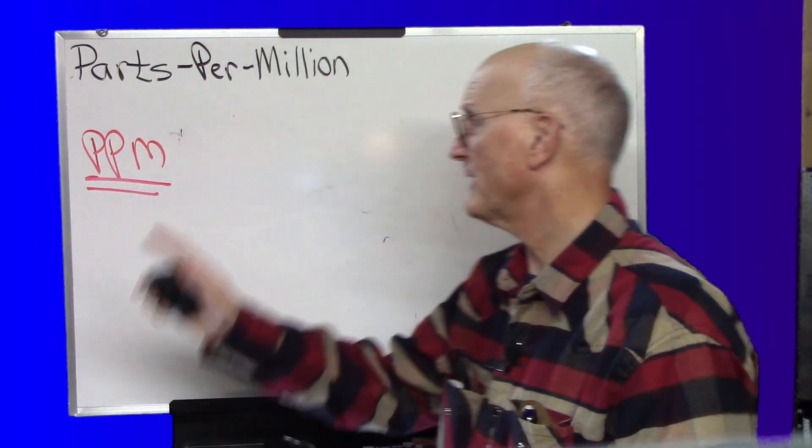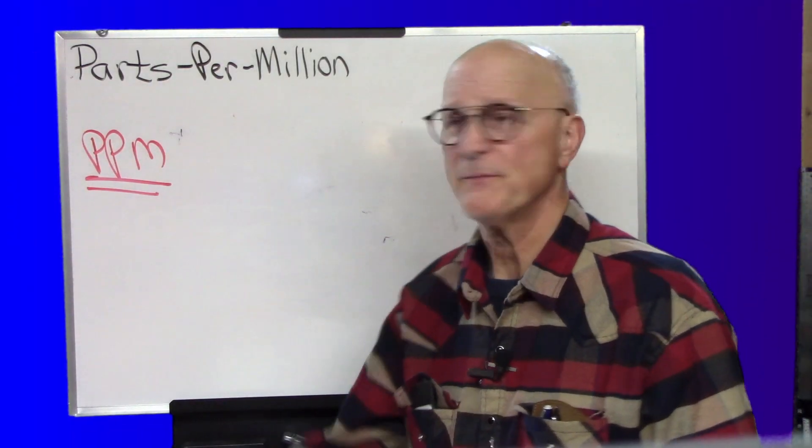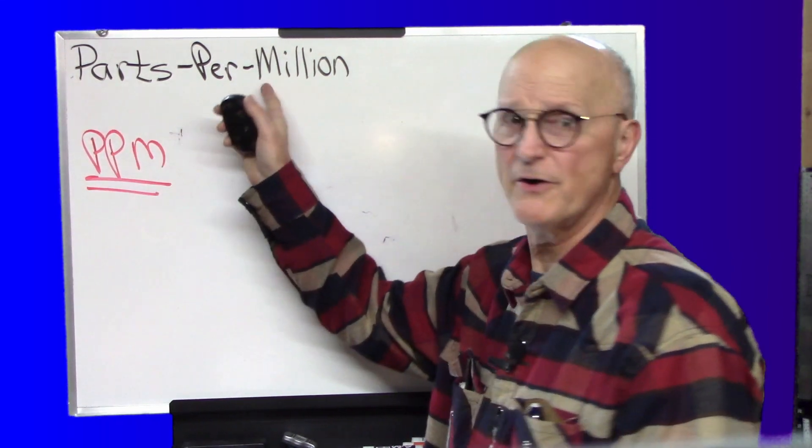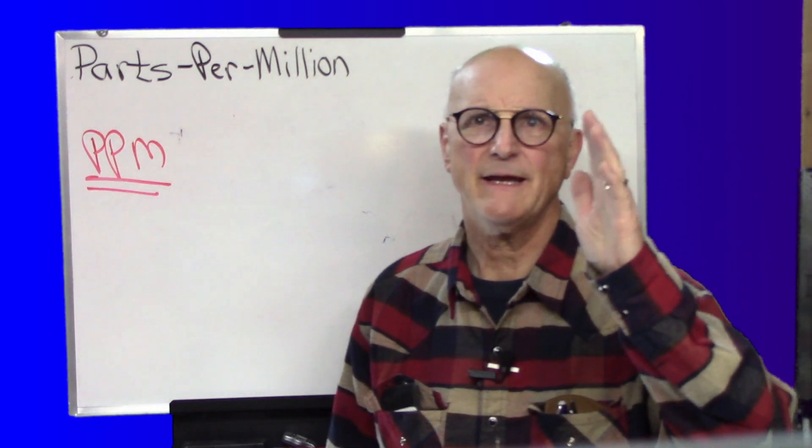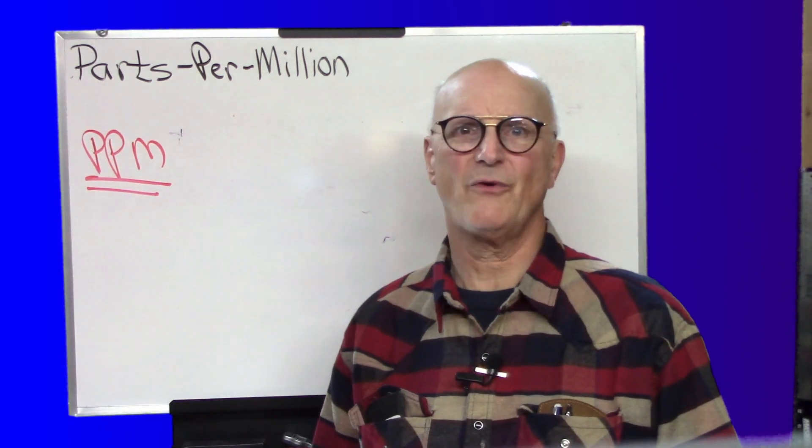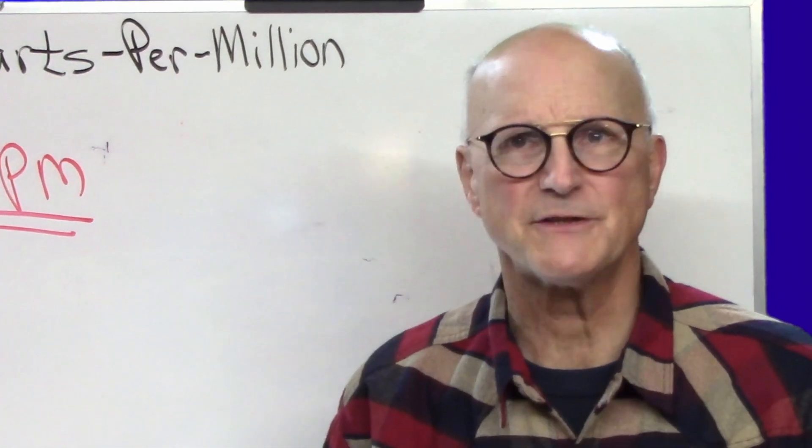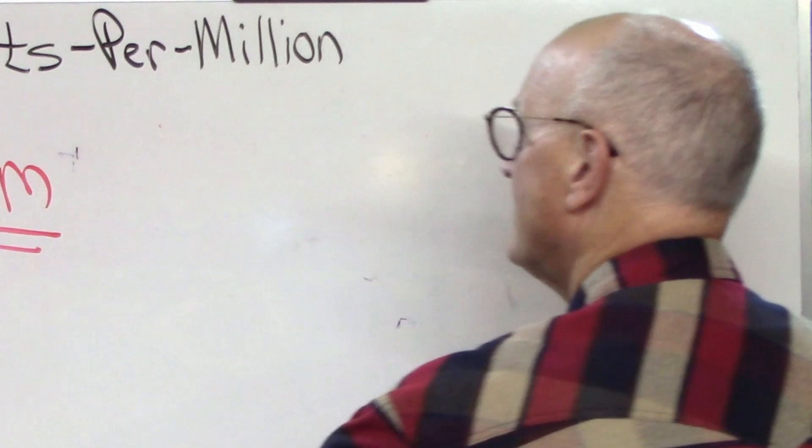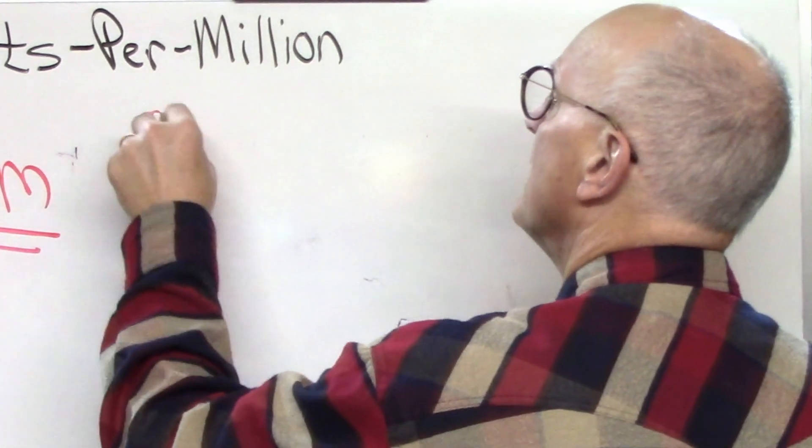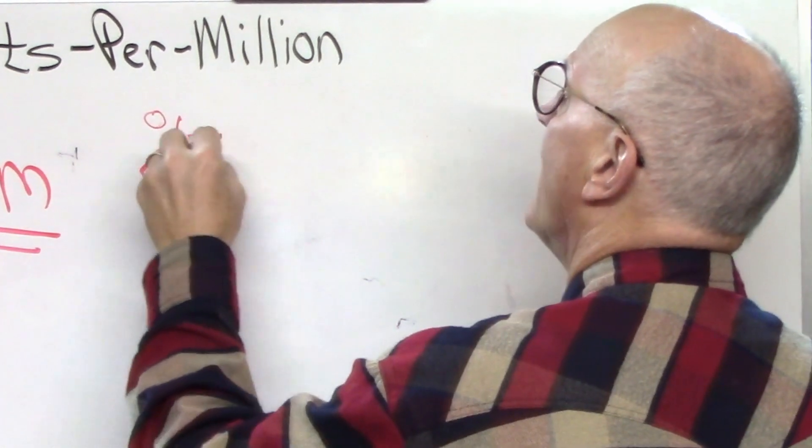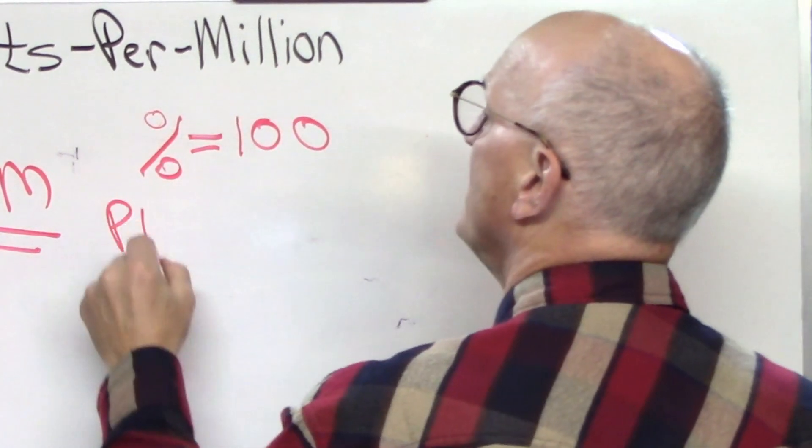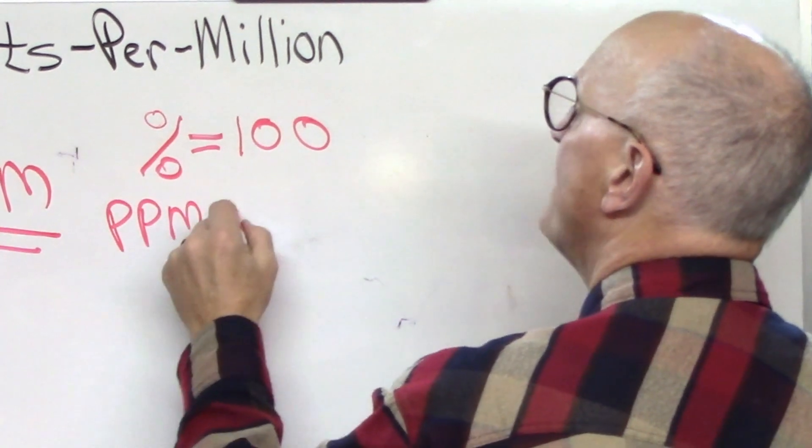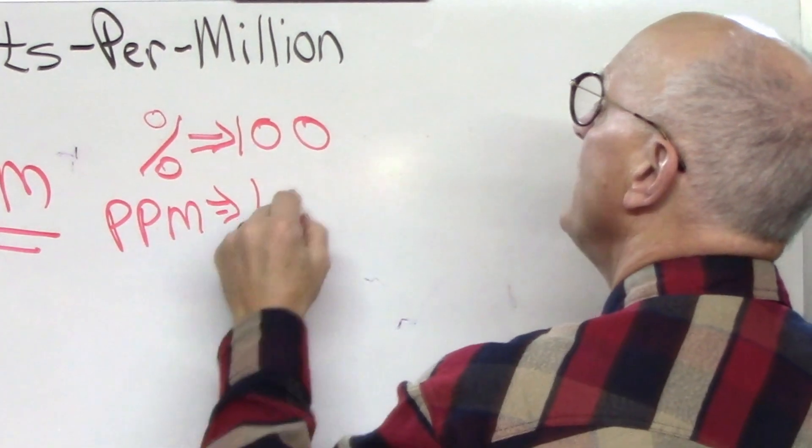So let's turn our attention to parts per million. PPM. Parts per million. Now already you're beginning to probably see the light of where we're going. Parts per million is actually no different than percentage. Except that percentage is based on 100, and parts per million is based on 1 million.